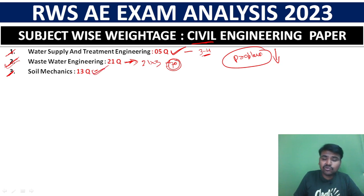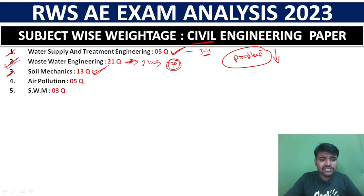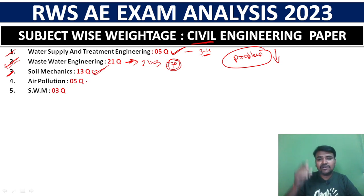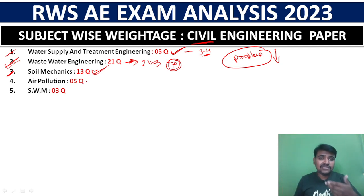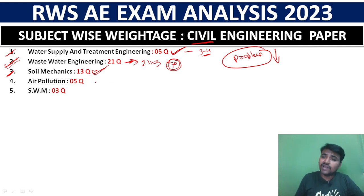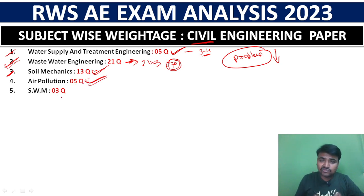Soil mechanics is very important. Next is air pollution and conservation of natural resources — water, air, and land — which is a mix of topics. Moving on, Solid Waste Management (SWM) has three questions. A notable example covered is the Bhopal gas tragedy strategy.